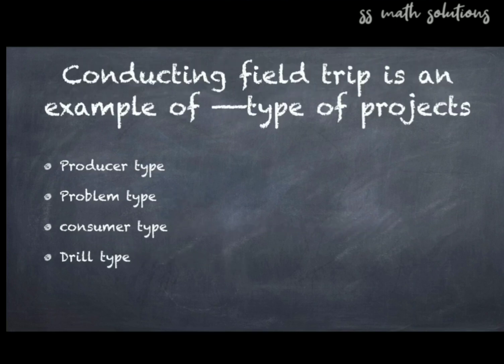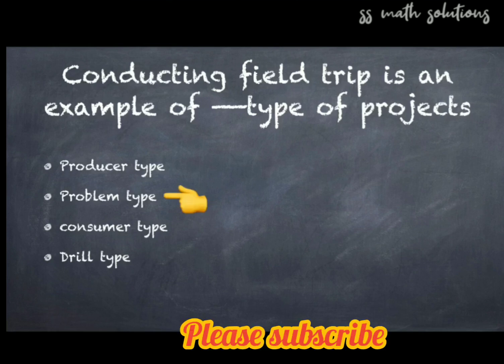Question 5: Conducting a field trip is an example of what type of project? Options: producer type, problem type, consumer type, drill type. The answer is option two — problem type of project.